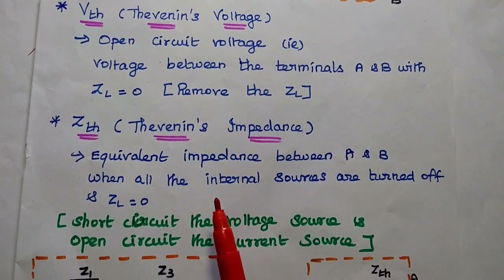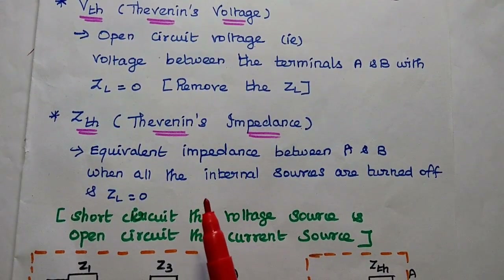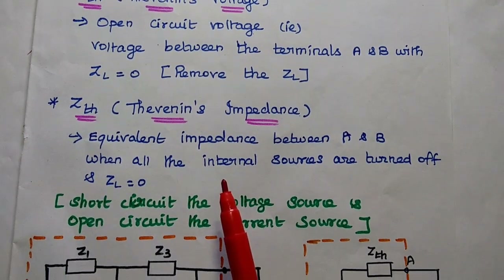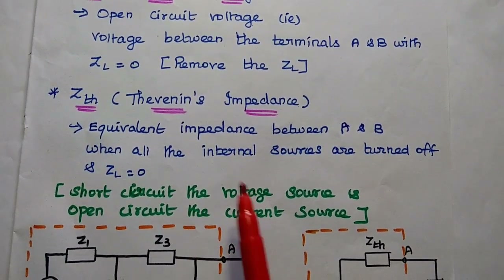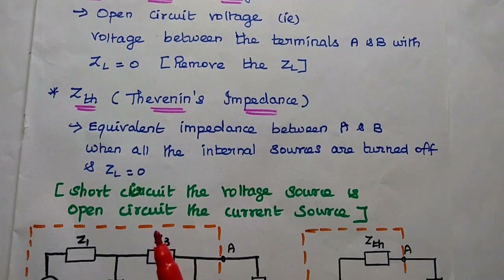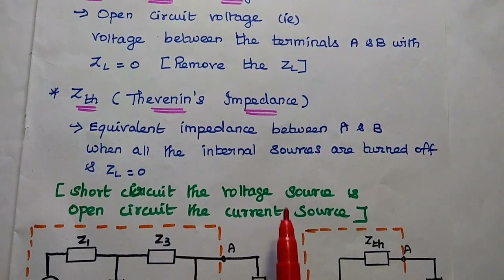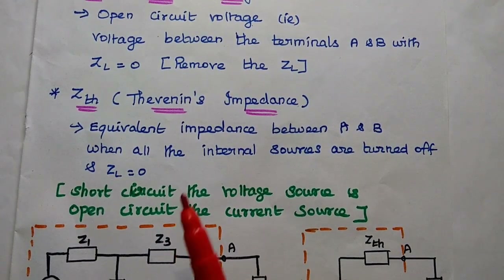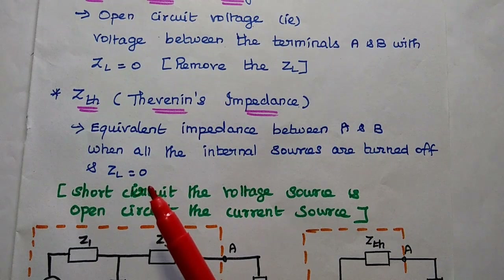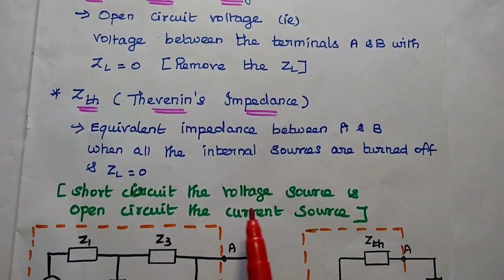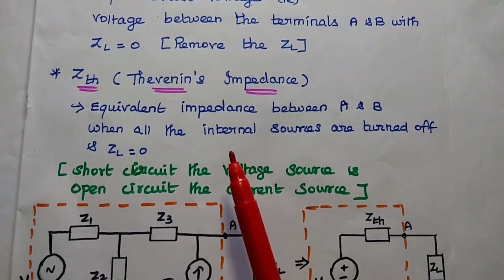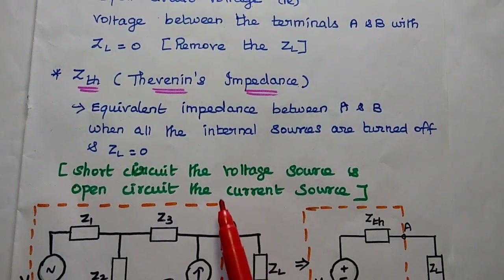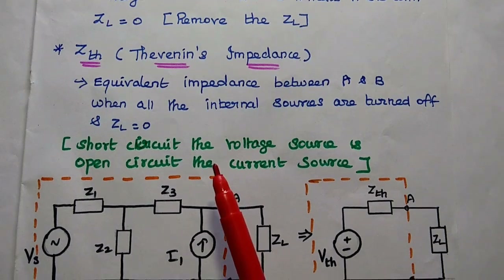Thevenin's impedance can be obtained by removing the load impedance and also short-circuiting all the voltage sources in the linear network and open-circuiting the current sources. We remove the load impedance, short-circuit the voltage source, and open-circuit the current source in the given circuit to find out the Thevenin's impedance. This is the condition for Thevenin's impedance.